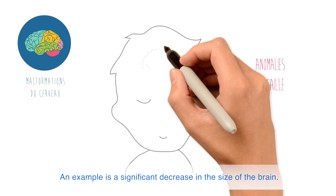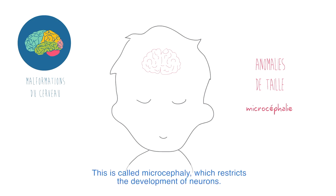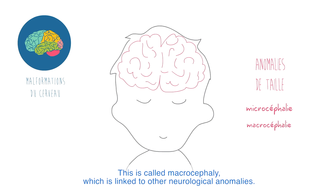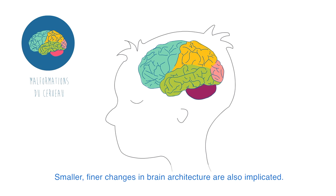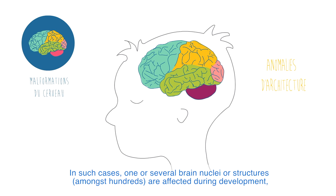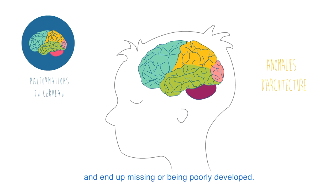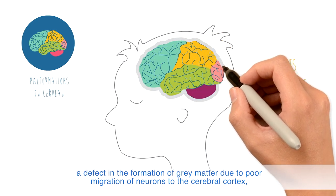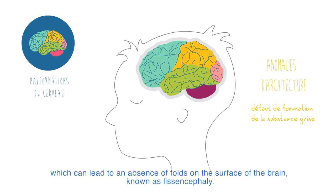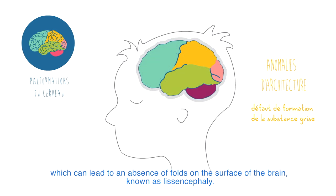An example is a significant decrease in the size of the brain — this is called microcephaly, which restricts the development of neurons. Or on the contrary, the brain can be abnormally large, which is called macrocephaly, linked to other neurological anomalies. Smaller, finer changes in brain architecture are also implicated, where one or several brain nuclei or structures are affected during development and end up missing or poorly developed. Examples include a defect in the formation of grey matter due to poor migration of neurons to the cerebral cortex, which can lead to an absence of folds on the surface of the brain known as lissencephaly.